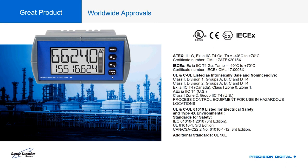Worldwide approvals are a major draw for loop-powered devices, which can achieve intrinsically safe and non-incendive ratings at a much lower price than equivalent explosion-proof devices. The Loop Leader carries ATEX, IECEx, and UL/cUL intrinsically safe and non-incendive approvals for hazardous areas, as well as UL and cUL general electrical safety listings for safe areas — covering both general panel shops and hazardous location requirements.